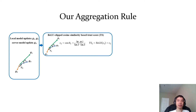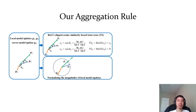Since the cosine similarity is positive, the trust score equals the cosine similarity. For client 2, we first compute the cosine similarity between g2 and g0, then we use ReLU to clip it to obtain the trust score. Since the cosine similarity is negative, the trust score becomes zero, effectively neutralizing the local model updates from malicious clients.